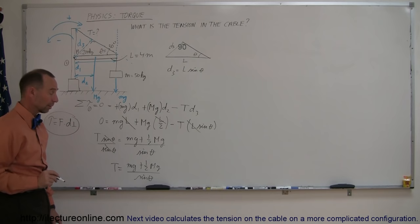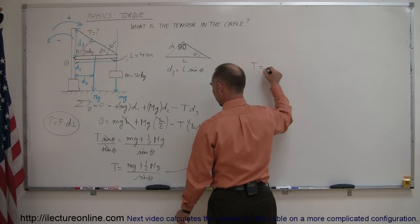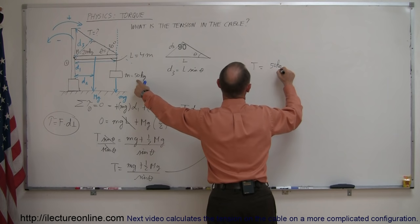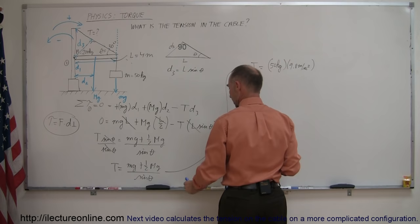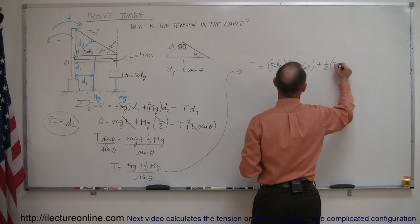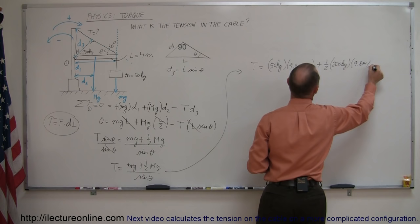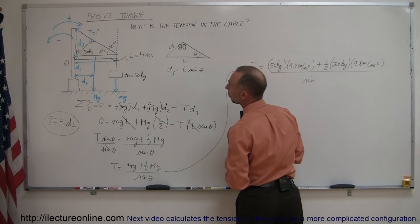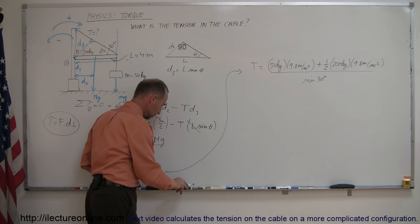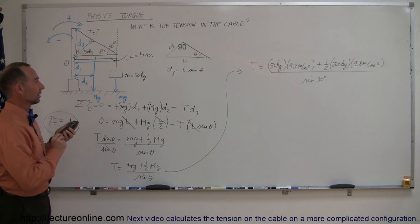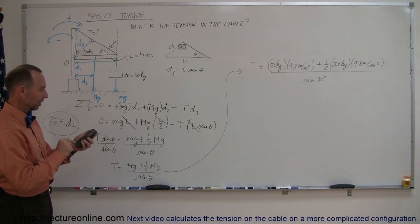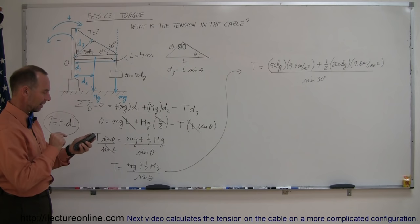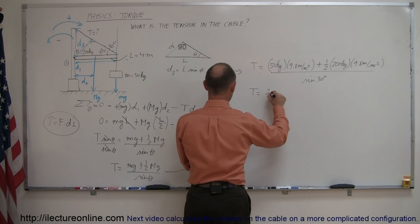Plugging in the numbers: T = (50 kg × 9.8 m/s² + ½ × 200 kg × 9.8 m/s²) / sin(30°). Since sin(30°) = ½, we calculate 50 × 9.8 plus 100 × 9.8, divided by one-half. The tension in the cable is equal to 2,940 newtons.